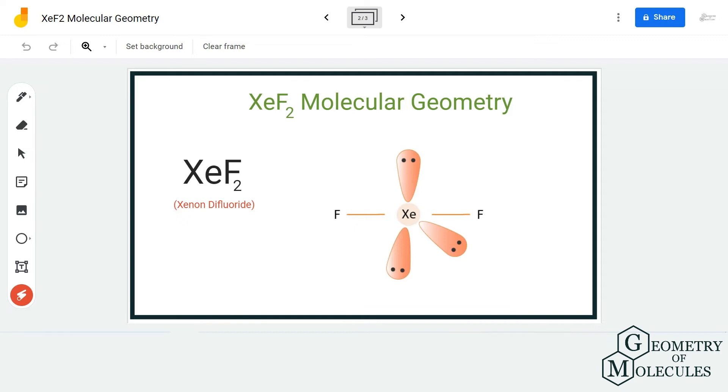Because there are only two atoms bonding to the central atom, the molecular geometry of this molecule is linear as there is a straight line and all the atoms are in the same plane. The molecular geometry of XeF₂ molecule is linear and the bond angle is 180 degrees.